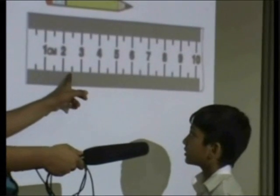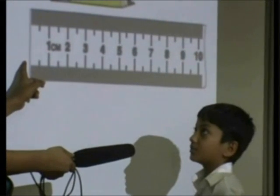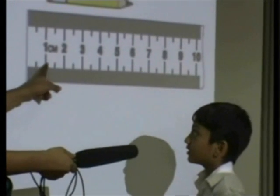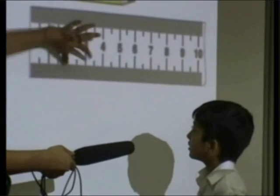This to this is one centimeter. Yeah. And this to this? That is zero centimeter. This is zero centimeter. How much is this to this? Two centimeters. Okay.